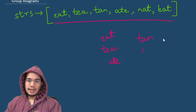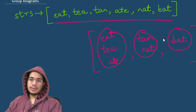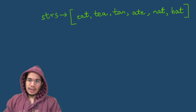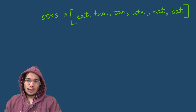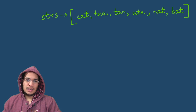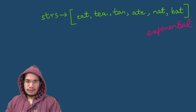Nat has the same set of characters as tan, so they're in the same group, and bat is in a third separate group. So we have bat as one group, eat/tea/ate as the second group, and tan/nat as the third group — that's what we want to return. Now one approach to solve this would be to try every possible set of anagram groups and keep checking if it's correct, but that's going to be extremely expensive — exponential complexity — so that's not a good approach.